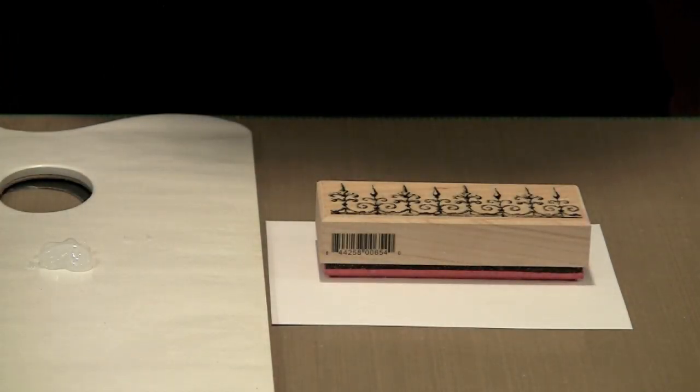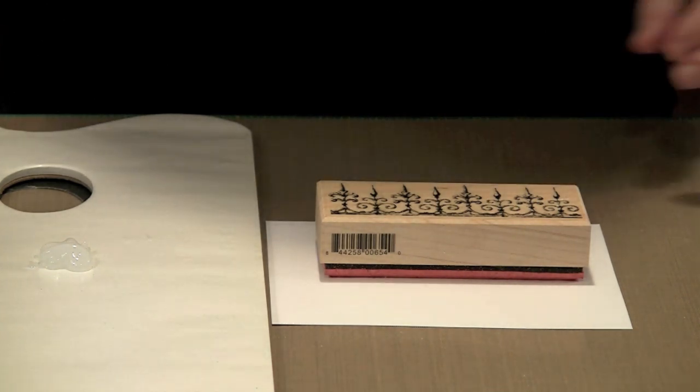Next up we're going to use a rubber stamp and the glue, and eventually the foil, so you can foil a rubber stamped image.